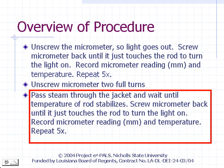Heat the rod by passing steam into the jacket. Once the temperature has stabilized — somewhere close to 100 degrees Celsius — turn the micrometer screw clockwise until it just touches the rod and turns on the light. Repeat five times and record the temperature each time you make a reading.